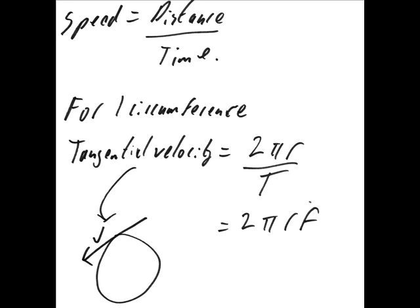This gives us a value for speed, called the tangential velocity. This is the velocity of an object if it were to suddenly lose the force holding it in a circle and fly off at a tangent to the circle.